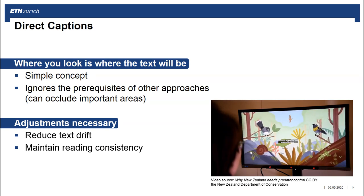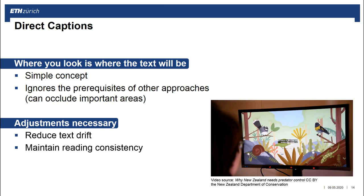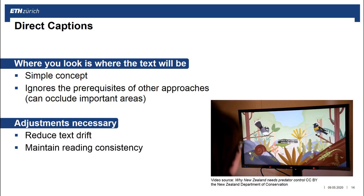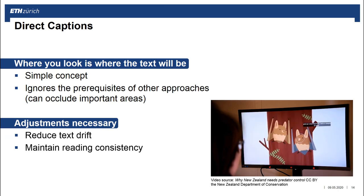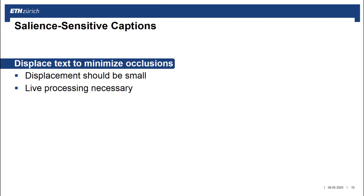However, some of the birds are occluded by the captions. Salient-sensitive captions aim to reduce occlusions with important video content by a displacement of the captions. This displacement has to be calculated live in sync with the gaze.